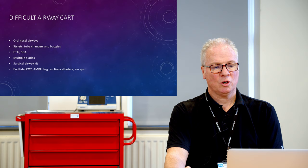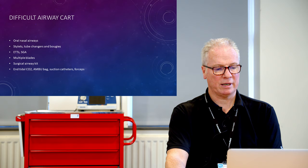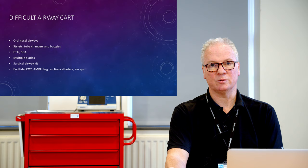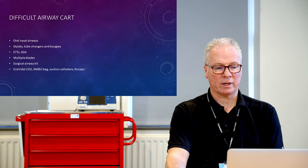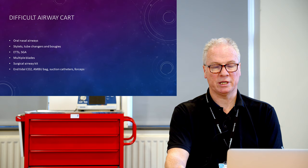On the difficult airway cart, make sure you have the adjuncts - end-tidal CO2 to check tube placement, because sometimes you may have got the tube in but it's not easy to confirm, and end-tidal CO2 will allow you to do that quickly. Ambu bags, suction catheters, forceps, stylets, tube changers, and bougies should all be available on the difficult airway cart.